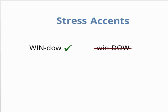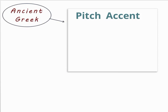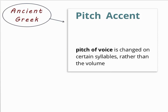Latin too had a stress accent. But ancient Greek used a different kind of accent — instead of a stress accent, it used a pitch accent. The pitch of the voice changed on certain syllables rather than the volume.